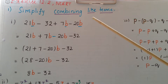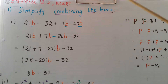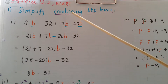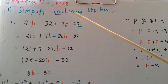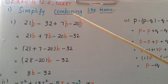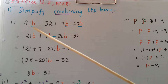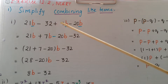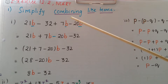This is the first problem from Exercise 12.2 from NCERT — simplify by combining like terms. Here we have to combine the like terms; combine means add the like terms. The first one is 21b minus 32 plus 7b minus 20b.